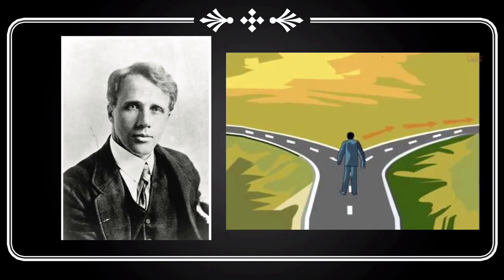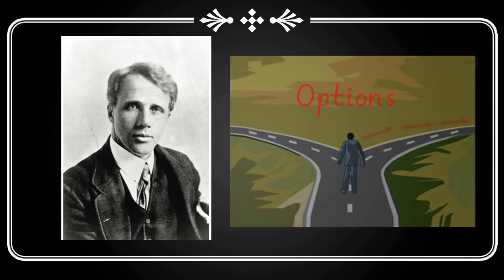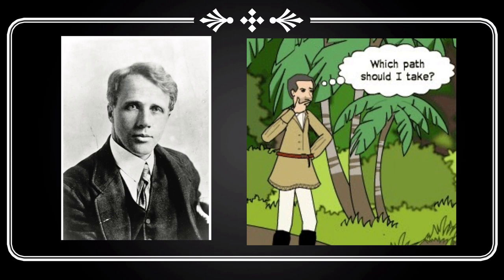Poet ये बताना चाहते हैं कि ये जो दो रास्ते हैं, ये actually रास्ते नहीं बल्कि options हैं हमारे life के। अक्सर हमारे साथ ऐसा होता है कि हम एक ऐसी situation में आ जाते हैं जहाँ हमको दो options में से कोई एक choose करना पड़ता है। तब हम लोग पूरे विचलित हो जाते हैं — हम सोचते हैं कि ये option choose करें या वो option। Poet के साथ भी बिल्कुल ऐसा ही हुआ है — वो दोनों options को choose करना चाहता है, लेकिन ऐसा हो नहीं सकता।